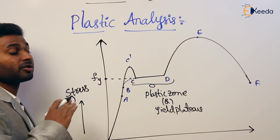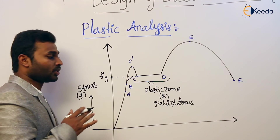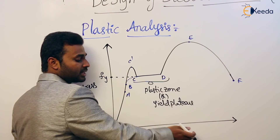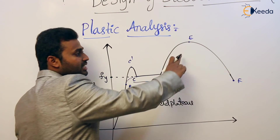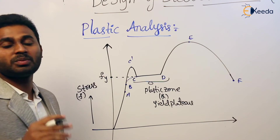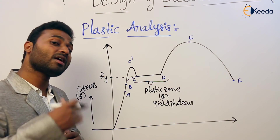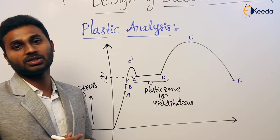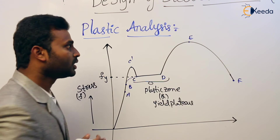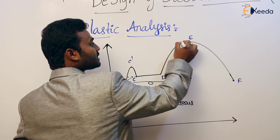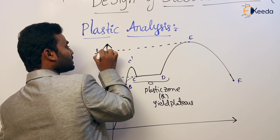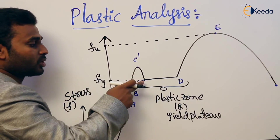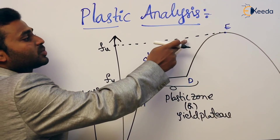At point D, upon increasing strain, the stress again increases — this is called the strain hardening zone, meaning the material gains hardness after D. Point E is the ultimate point, and the stress corresponding to it is the ultimate stress, Fu. The stress corresponding to point C is the yield stress, Fy.